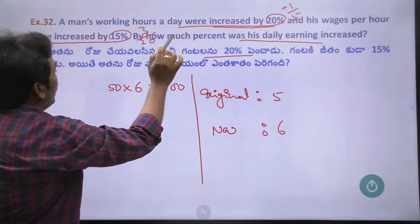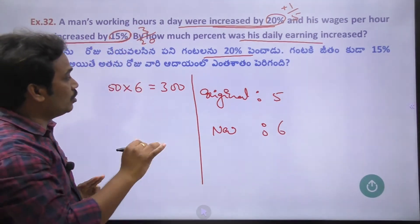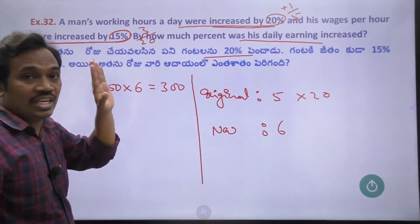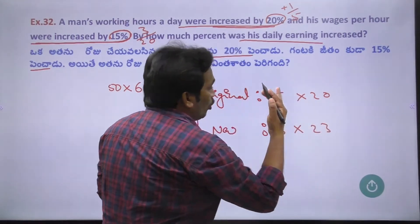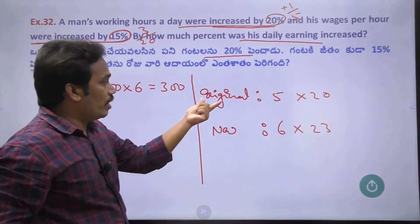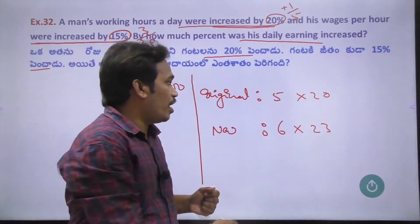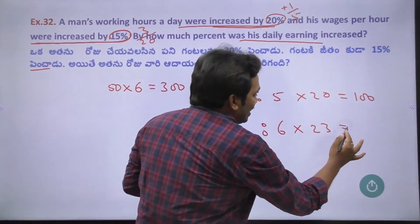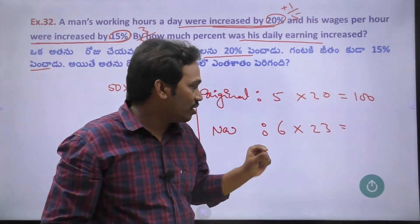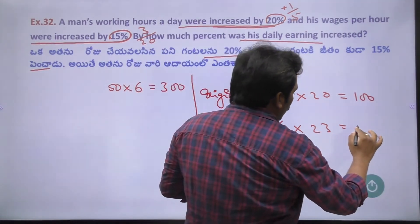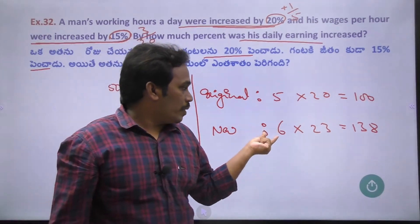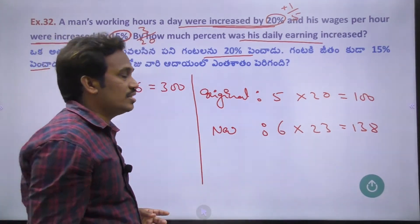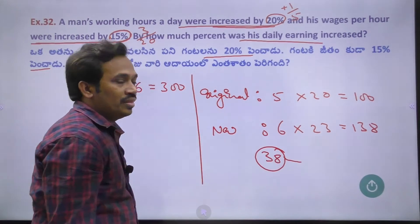And his wages per hour increased by 15%, which is 3 by 20. So if originally you earn 20 rupees per hour, after the increase you earn 23 rupees per hour. The original total was 5 hours × 20 = 100 rupees, and the new total is 6 hours × 23 = 138 rupees.